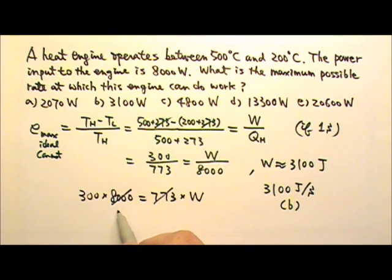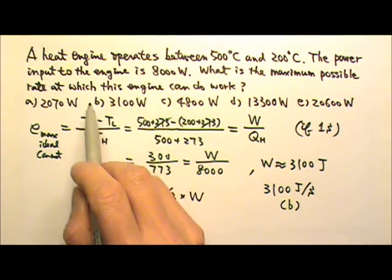So we can divide by 773 on both sides, and this will give us about 10, slightly more than 10. But it's about 10. That means W would equal to 300 times a number that is slightly more than 10, which will give us B.